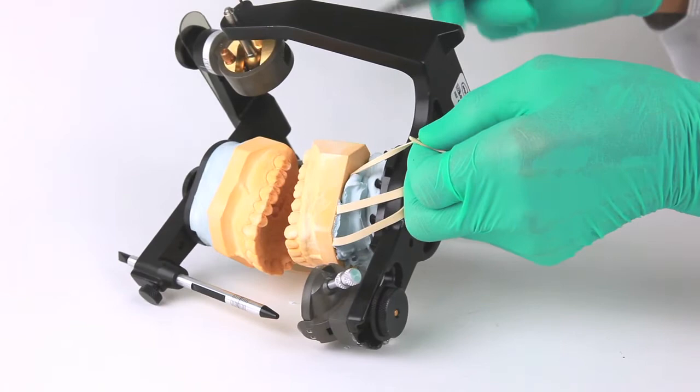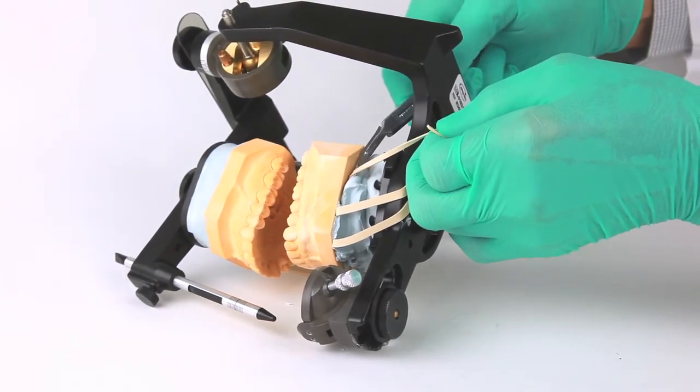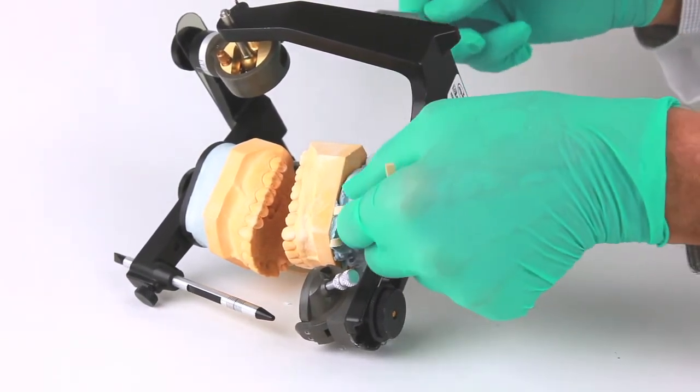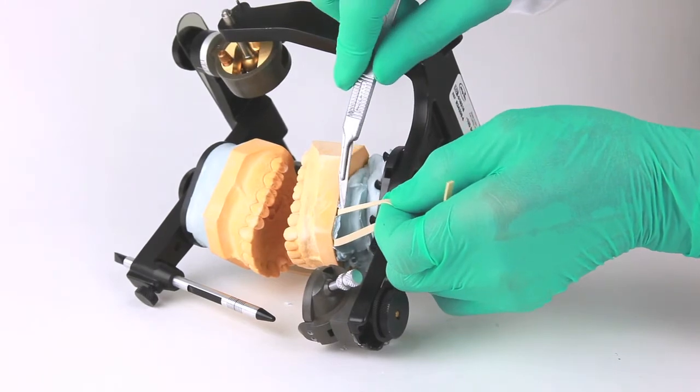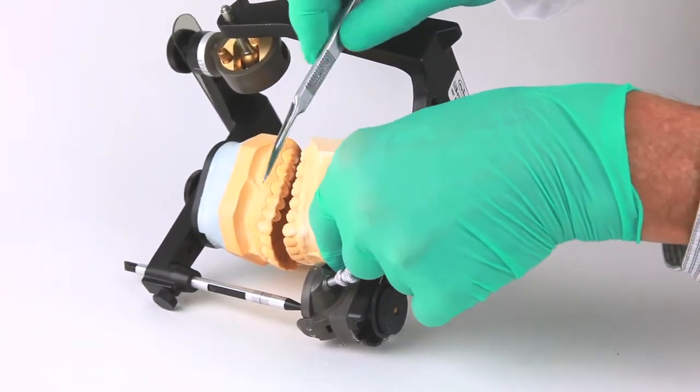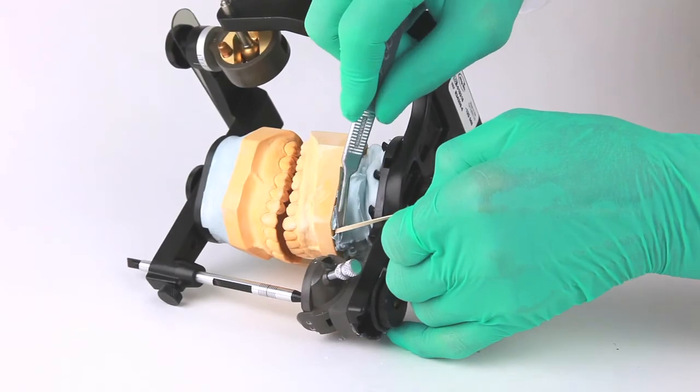The articulator can be easily repositioned for easy access to the flexi-mount attachment arms. With the individual arms stretched tightly, they can be easily cut at the base of the cast by using a sharp laboratory knife.